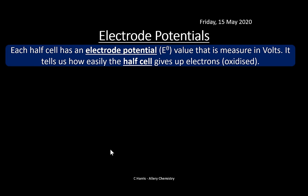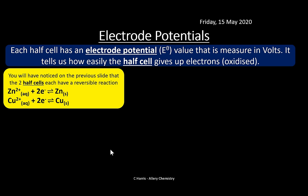Now let's look at electrode potentials. We use E° values — standard electrode potentials — which measure the electrode potential of each half cell in volts. They show how easily the half cell gives up electrons (oxidation). From the zinc–copper example, both half equations are written in their reduced form: something + electrons on the left side.